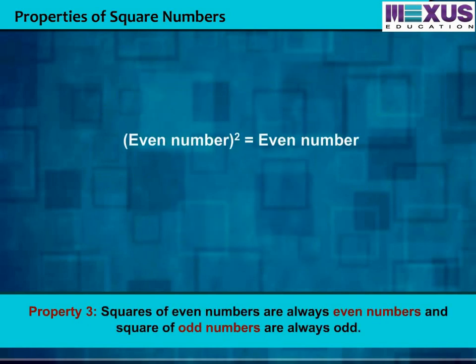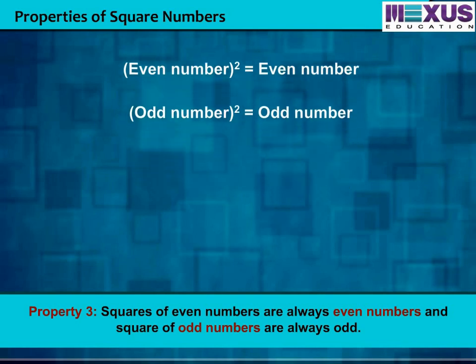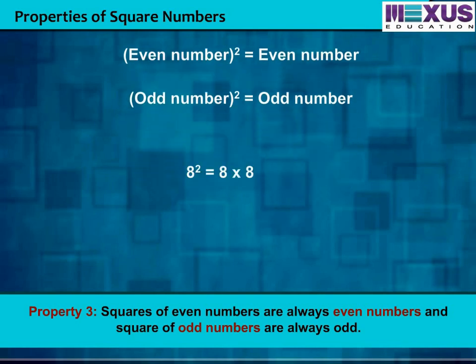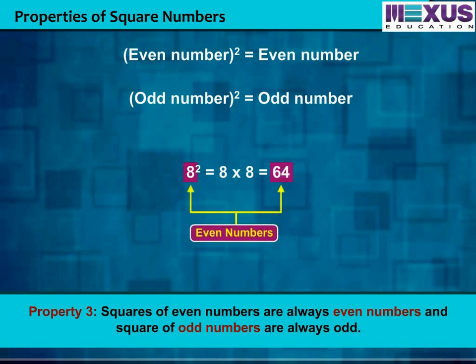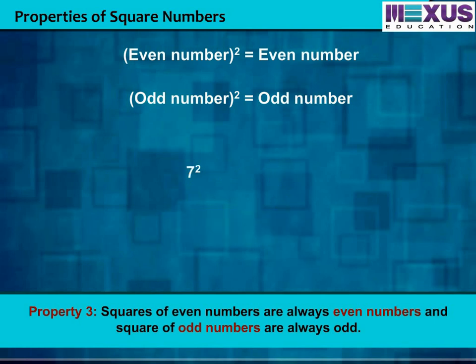Squares of even numbers are always even numbers, and squares of odd numbers are always odd. For example, 8 square is equal to 8 into 8, which equals 64. Here we can see that both the number 8 and 64 are even numbers. Let us see one more example: 7 square is equal to 7 into 7, which equals 49. Here too, we can see that both the numbers 7 and 49 are odd numbers.